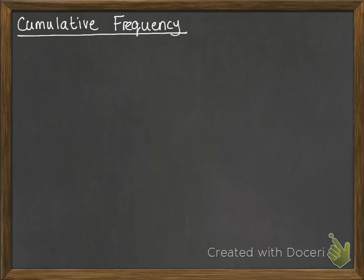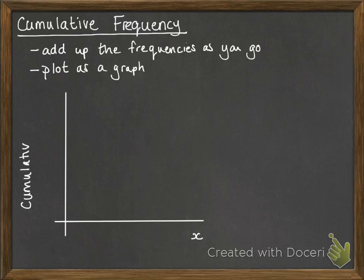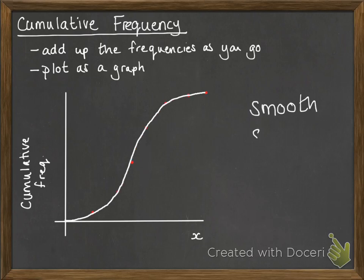First of all, cumulative means that we're adding up the frequencies as we go along. Then we plot them as a graph and it will look something like this. You plot your points on, join them up with a nice smooth line — and it should be smooth and S-shaped.